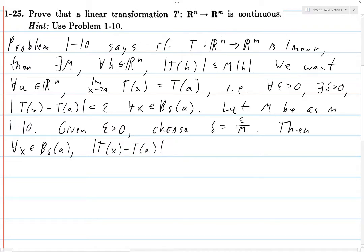Then for every single x in this ball of radius delta around A, what happens when we take T(x) minus T(A)? Well, since T is a linear transformation, we can write this as T(x minus A). But now we can go ahead and apply the inequality that we have.